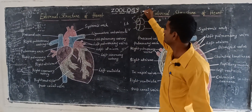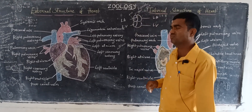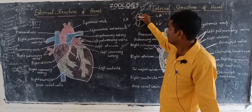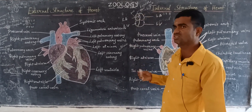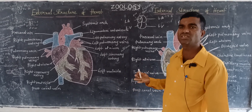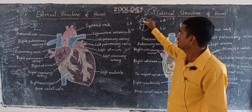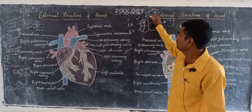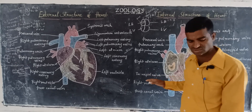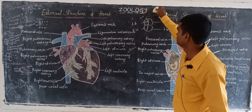When the foramen ovale converts into the fossa ovalis, if a pore is still partially present continuously when the lungs become functional, that is called patent foramen ovale. So patent foramen ovale is present in the right atrium.